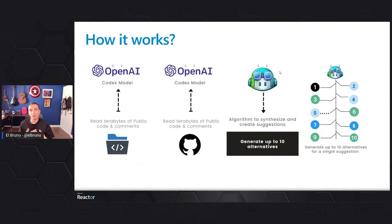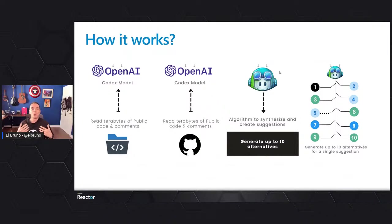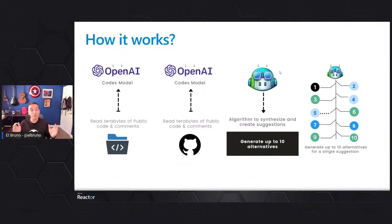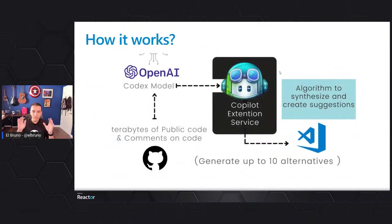Copilot is an AI model trained on the code you type in a code editor. Initially it was Visual Studio Code — now Visual Studio 2022, PyCharm, JetBrains, and plenty of other IDEs support Copilot. Copilot analyzes what you are typing and gives you suggestions from a model called the Codex model, which is a huge AI model trained with terabytes of code and comments from GitHub and public repositories. Once you start using Copilot, you'll get inline suggestions in your IDE and up to 10 extra suggestions to choose from.